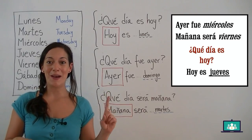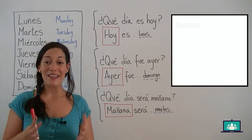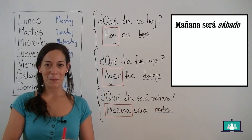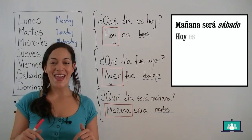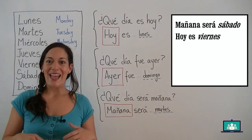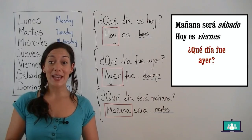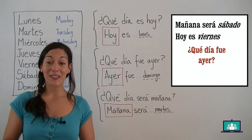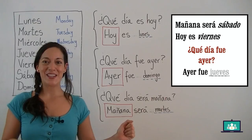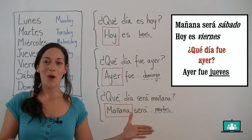Y una más — just one more. Mañana será sábado. Hoy es viernes. ¿Qué día fue ayer? Ayer fue jueves. Muy bien. Ayer fue jueves. Perfecto.